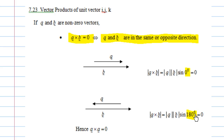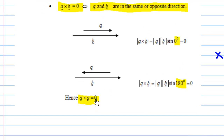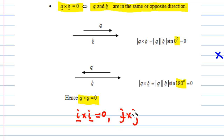The length of the cross product vector is the magnitude of a times magnitude of b times sine of zero, which is zero — or magnitude of a times magnitude of b times sine 180, which is also zero. So in conclusion, a cross a is equal to zero. From this, we can deduce that i cross i is zero, j cross j is zero, and k cross k is zero.